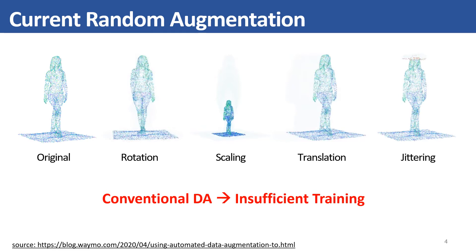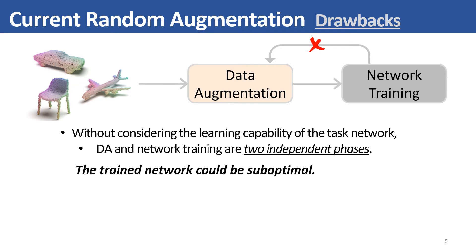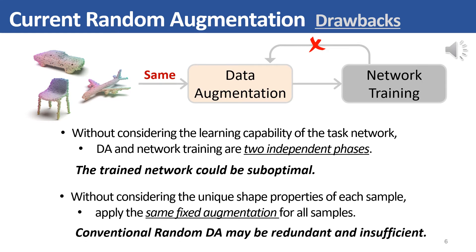Although conventional data augmentation tends to be effective for existing classification networks, it is mainly caused by two insufficiencies. First, existing point cloud classification methods take data augmentation and network training as two independent phases without joint optimization, so the trained network could be suboptimal. Second, random augmentation applies the same fixed augmentation function for all input samples without considering the shape complexity of each training sample. Therefore, conventional data augmentation may be redundant or insufficient.